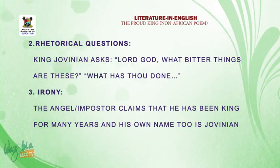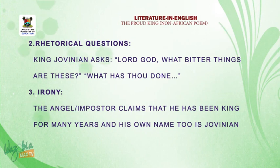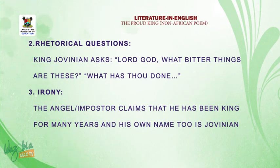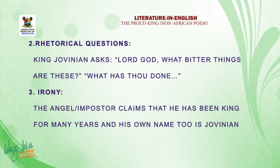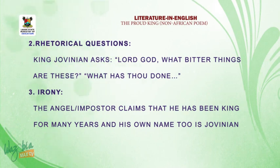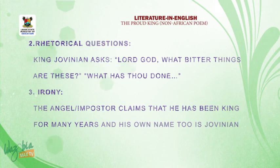Another poetic device used by William Morris is irony. We have different types of irony here, but the dramatic irony can be seen when the angel or impostor that King Jovenian met in the palace was claiming that he had been king for many years, and that the late queen and the late king were his parents. We all know this is pure irony because he is not the real king. Dramatic irony is when the audience knows more than the characters on the stage — you, the reader, know more than all the characters in the poem.